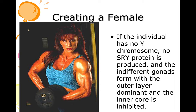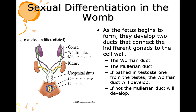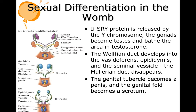If the individual has no Y chromosome, no SRY protein is produced, and the indifferent gonads form with the outer layer dominant. As the fetus develops, two ducts connect the indifferent gonads to the cell wall: the Wolffian duct and the Müllerian duct. If bathed in testosterone from the testes, the Wolffian duct develops; if not, the Müllerian duct develops. If SRY protein is released, the gonads become testes and bathe the area in testosterone. The Wolffian duct develops into the vasa deferentia, epididymis, and seminal vesicle; the Müllerian duct disappears. The genital tubercle becomes a penis and the genital fold becomes a scrotum.